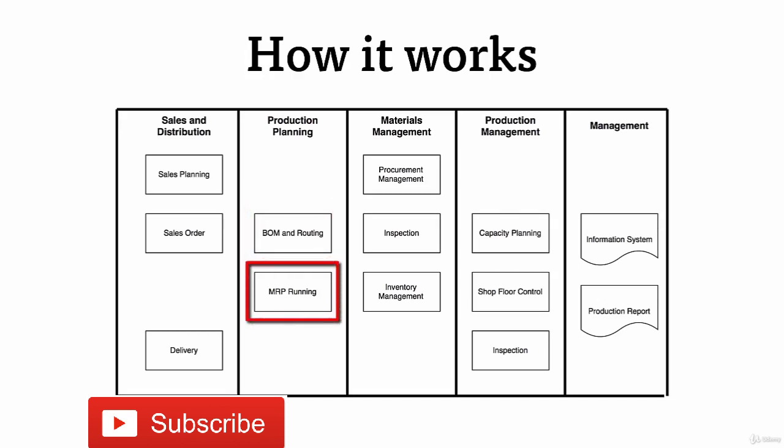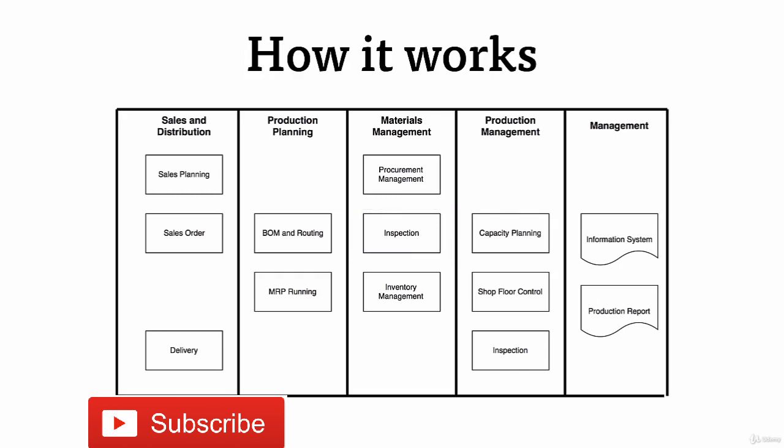The planners can then run Material Requirements Planning to calculate the quantities of raw materials needed. The process flows to the Material Management module, where the demand for raw materials is transferred to the purchasing department. The buyer, Mike, creates purchase orders and purchases the raw materials from vendors. When they arrive, company inspectors in the quality department inspect the raw materials. Those that meet standards are moved to storage locations, and unqualified raw materials are returned to vendors.